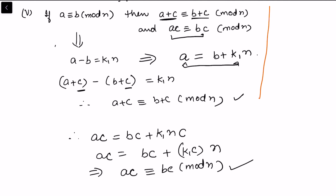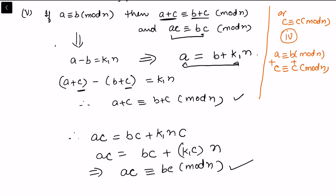We can also note that c is always congruent to c modulo n, so we can use property four to establish these results. Since a is congruent to b modulo n and c is congruent to c modulo n, by property four we can add or multiply these congruences to get the same results for property five.